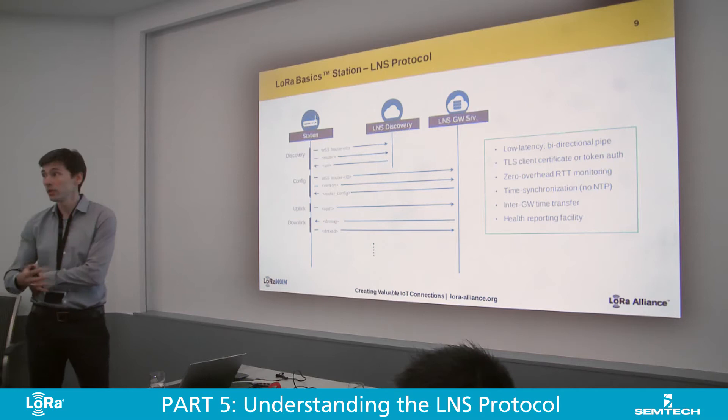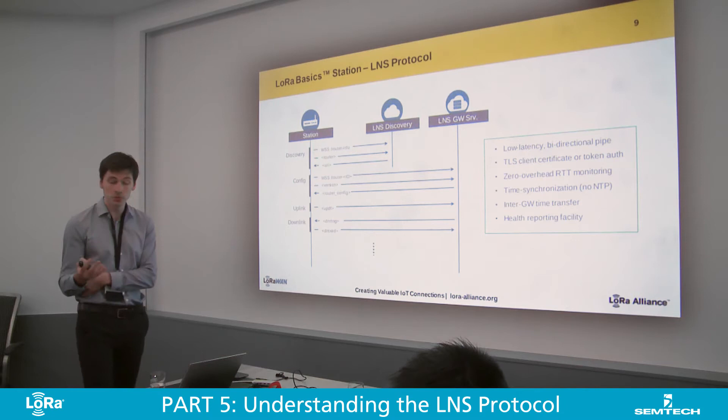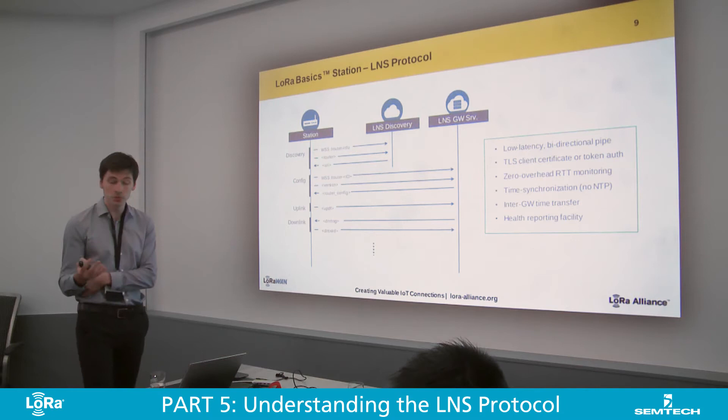In steady state, a number of messages can be exchanged. The simplest one is, of course, the uplink. As soon as something is seen on the radio, an uplink message is sent. If the network server wants to schedule a downlink, it will notify the gateway with a downlink message, and the gateway will acknowledge the actual transmission with a downTX message — confirming that the transmission actually took place.